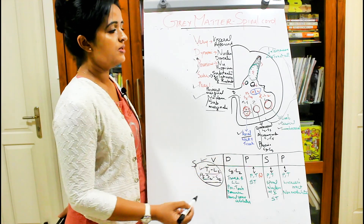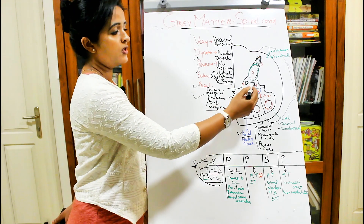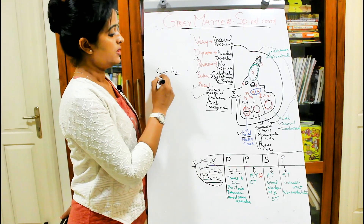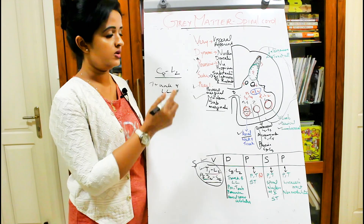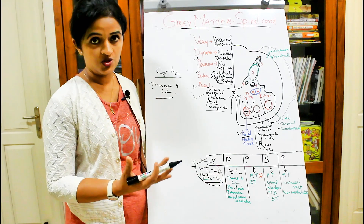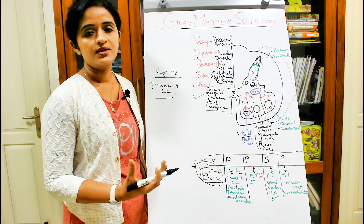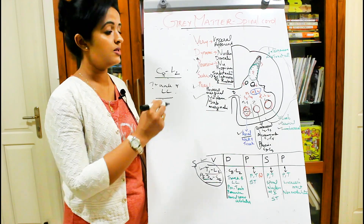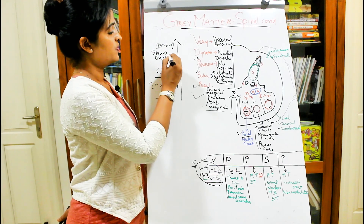The next group is the nucleus dorsalis. It is somewhat medial compared to the visceral afferent nucleus and you can look for it in the region C8 to L2 — the region supplying the trunk and lower limb — so the upper limb is excluded. It carries sensations from these regions, especially position sense, touch, and proprioception.